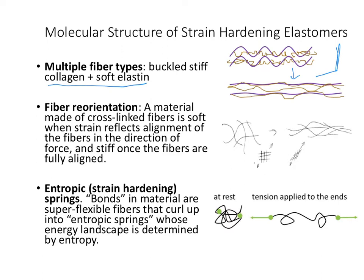A second cause of strain hardening elastomers is fiber reorientation. Whether you have a random or regular orientation of fibers, when you first stretch them, the fibers can reorient. Without individual fiber stretching — just by changing the angles between the nodes — a significant amount of elongation is allowed. But once they're fully aligned, just like the collagen fibers in the previous example, the only way to stretch the material is to stretch the actual fibers. So they're soft while reorienting and stiff while stretching.